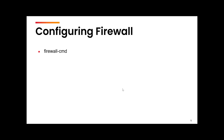To manage these services or zones we have two methods. Either we can use the command line interface, which I am going to discuss in this lecture, or you can use the graphical user interface. The services or ports you can manipulate will be the same either way. Once you have understood the command line interface, the graphical user interface will be easy to manage. To manage the firewall D service using the command line we need to use the firewall-cmd command.